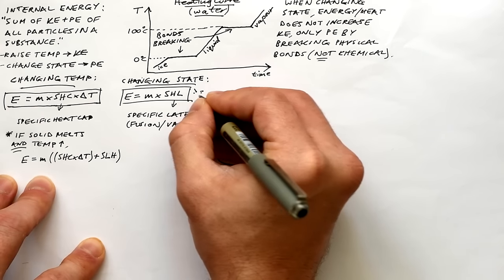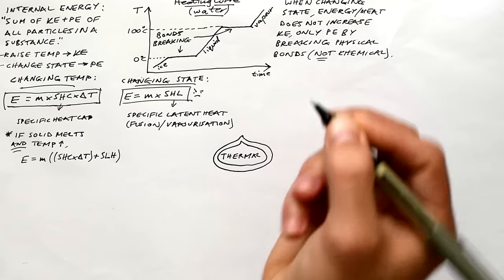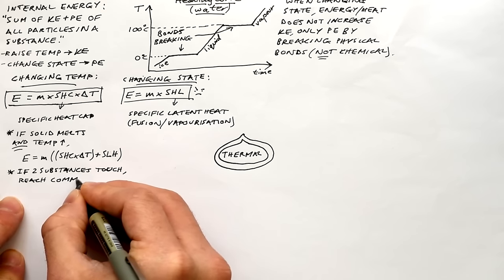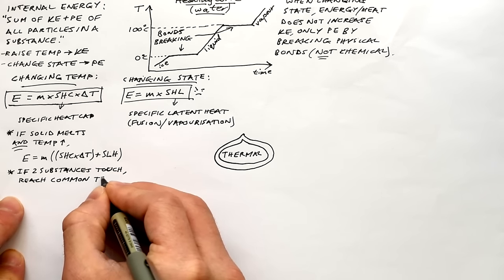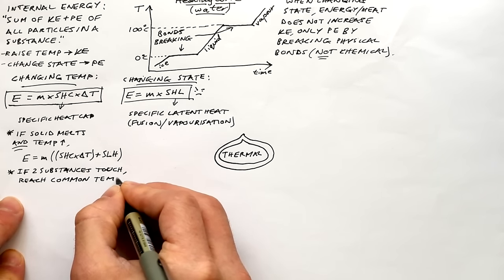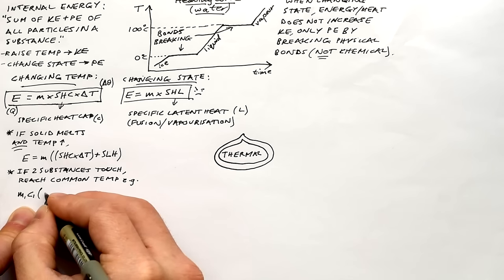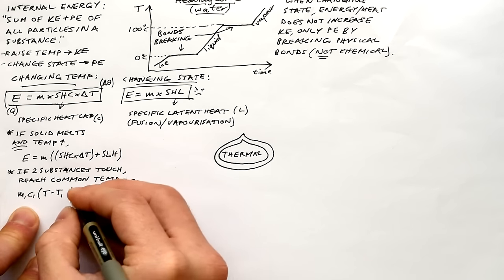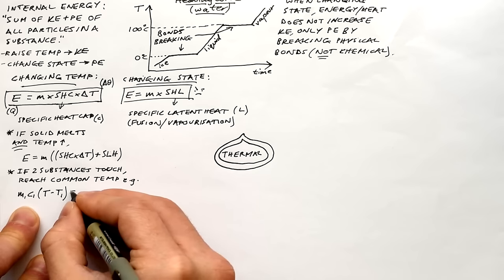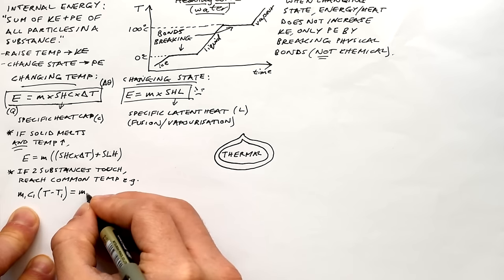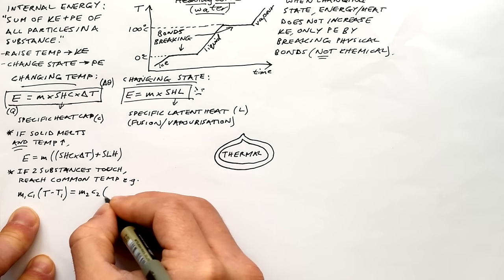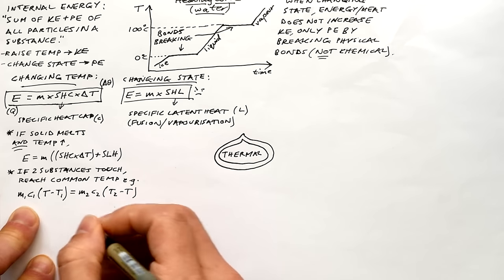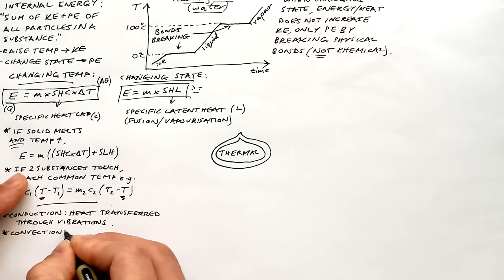So we can factorize it: energy is equal to mass times SHC times delta T plus SLH. This is just for A-level: if two substances come into contact with each other, eventually they will end up at a common temperature. If you have a question on this, all you have to do is equate those two energies — MC delta T — and delta T is going to be the common temperature take away the starting temperature, or vice versa.